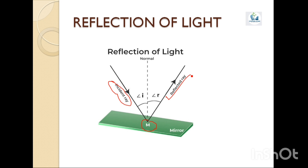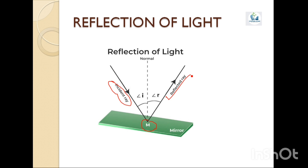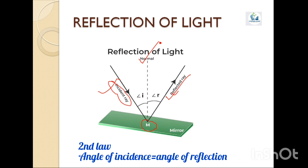The reflection of light from a plane surface or from a spherical surface takes place according to two laws known as the laws of reflection. Most of you already know these from 8th Standard Science, but let us revise. The first law states that the incident ray, the reflected ray, and the normal all lie on the same plane — none of them come out of the paper or go into the paper. The second law states that the angle of incidence (angle I) is equal to the angle of reflection.